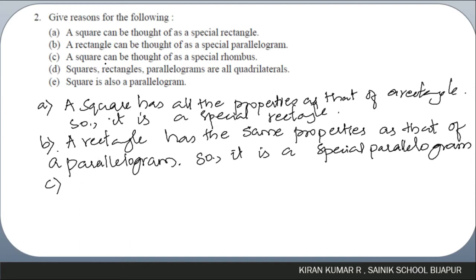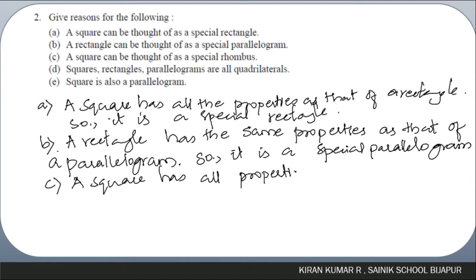A square can be thought of as a special rhombus because a square has all properties the same as those of a rhombus.